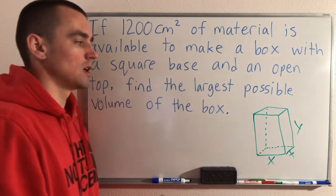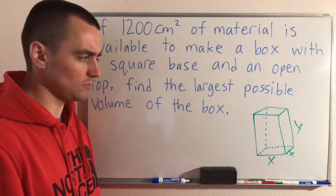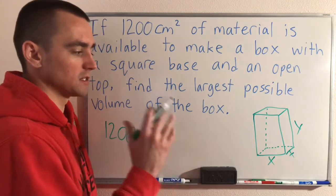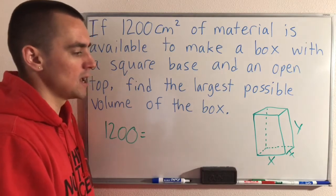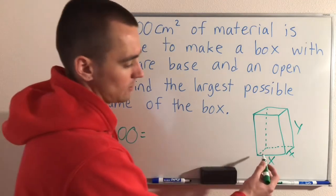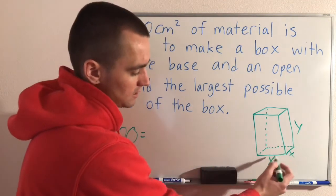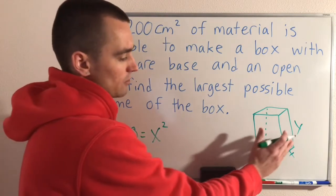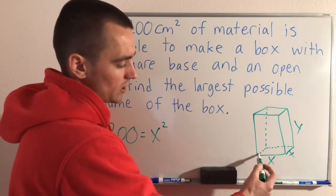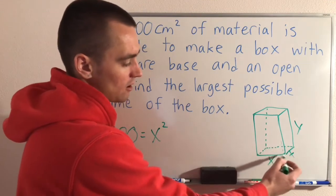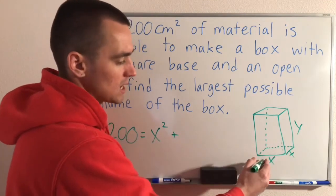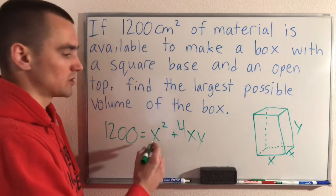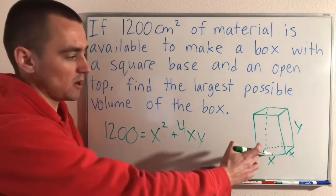So what you want to do is think about the total amount of material that's going to be used based on this box. We know that we have 1200 square centimeters of material, and we're going to need to make five sides of this box if we count the bottom as well. The total area of those five sides we want to add up, and those are going to add up to 1200. The bottom side is just x times x, so that gives us x squared. And then each of the other four sides are rectangles with one side being x and the other side being y, so the area of each is x times y. We have four of those sides, so the total area is 4xy.